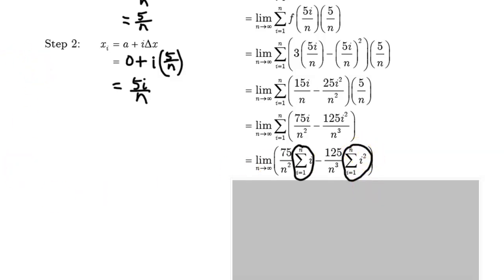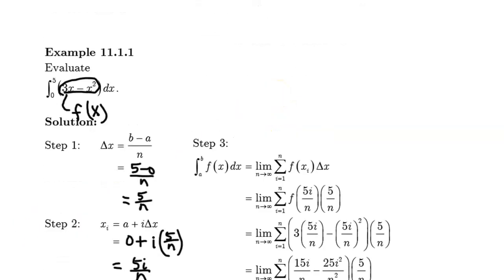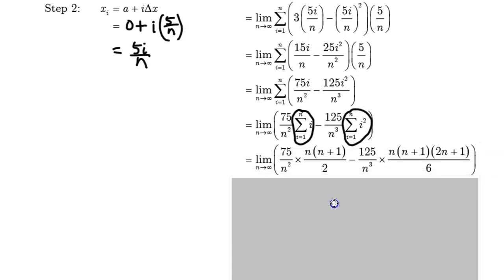Now, if you'll recall from a previous video or from your previous knowledge, the sum of the first n natural numbers is given by this expression, n times (n+1) over 2, and the sum of the first n squares is given by this expression over here. So I'm going to take these two right-hand expressions and sub them in where appropriate into my solution process here.